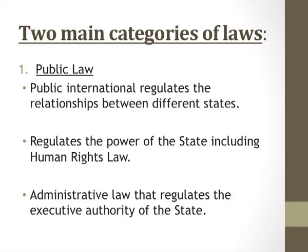There are two main categories of laws. We have public law as well as private law. Public law usually refers to the general public, and private law refers to the private part of society. Public law includes public international law, which regulates the relationships between different states, regulates the power of the state including human rights law, and administrative law, which regulates the executive authority of the state.